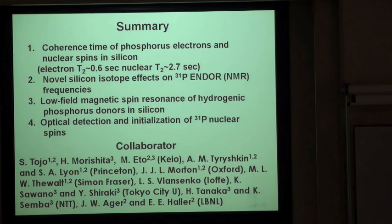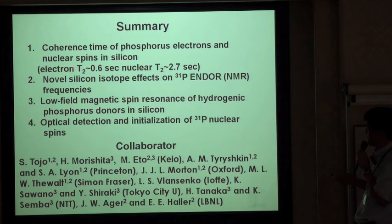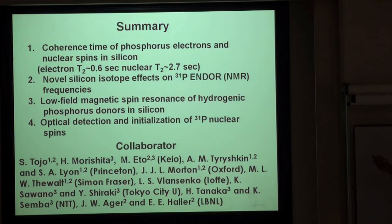To summarize, I have introduced four different topics, all on phosphorus in silicon. Coherence times have been measured: electron T2 up to 0.6 seconds and nuclear T2 up to 2.7 seconds by isotope purification. A novel silicon isotope effect on phosphorus-31 ENDOR frequencies was observed. Low-field magnetic spin resonance of phosphorus was realized. And optical detection and initialization of phosphorus-31 spins was demonstrated. Thank you very much for your attention.